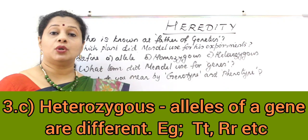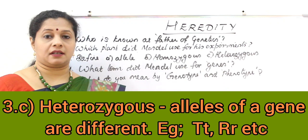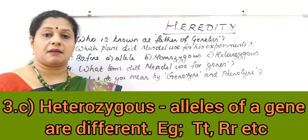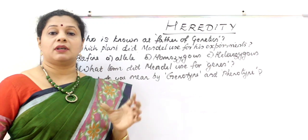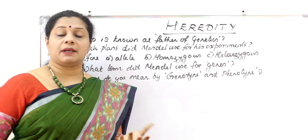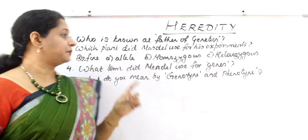Heterozygous means both alleles of a gene are different. For example, capital T and small t together — that is the heterozygous condition.